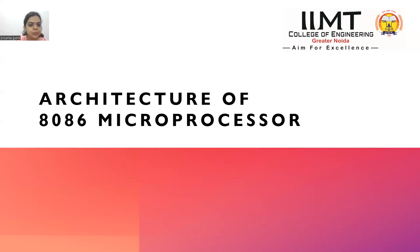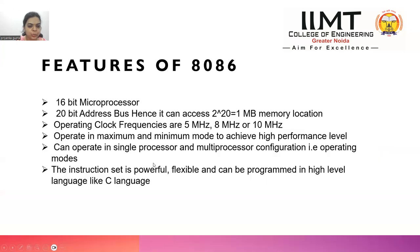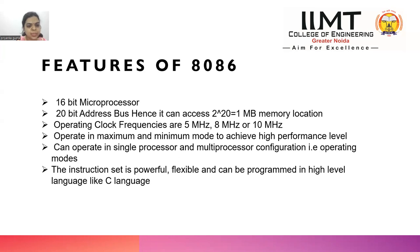Now let's start with the features of the 8086 microprocessor. The first feature is that it is a 16-bit microprocessor, meaning it has 16-bit registers which can store and process 16-bit data at a time. It also has a 16-bit data bus, which can transport a maximum of 16-bit data at a time.